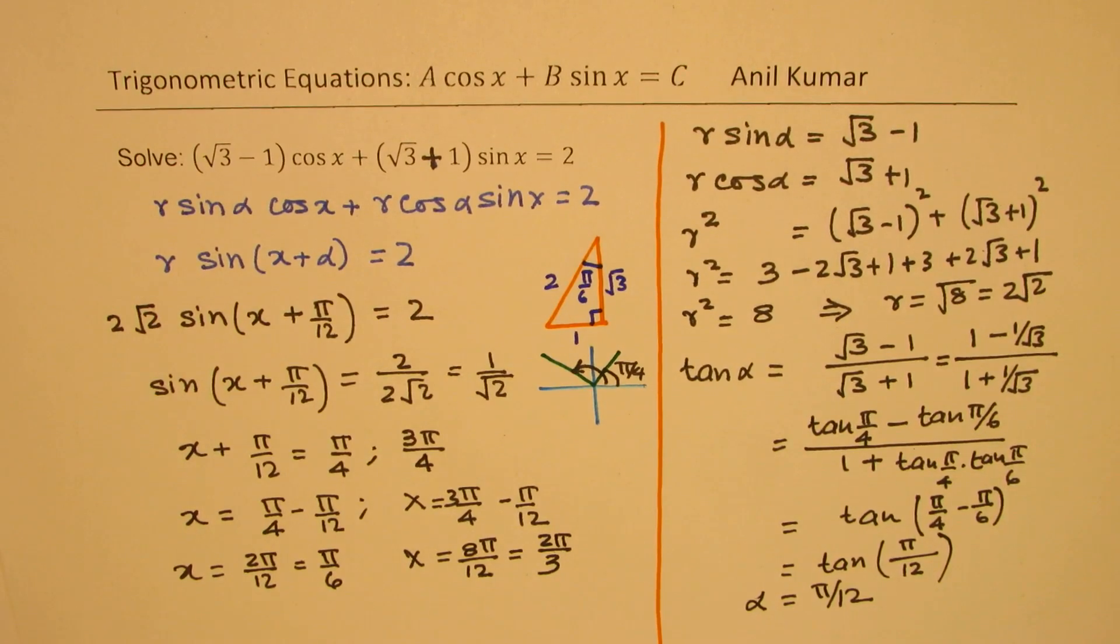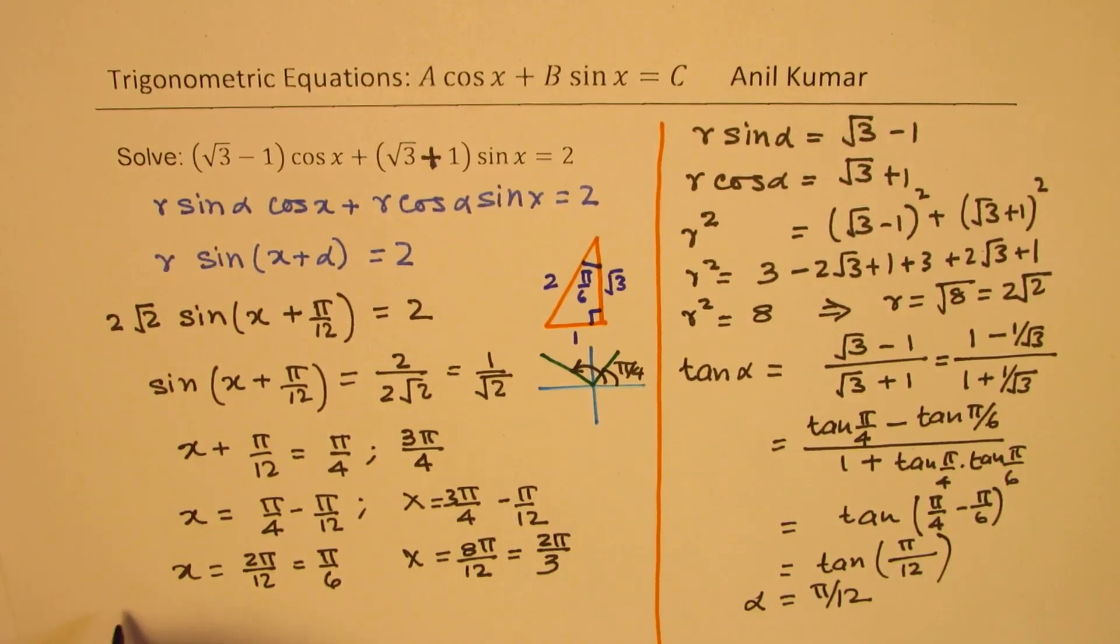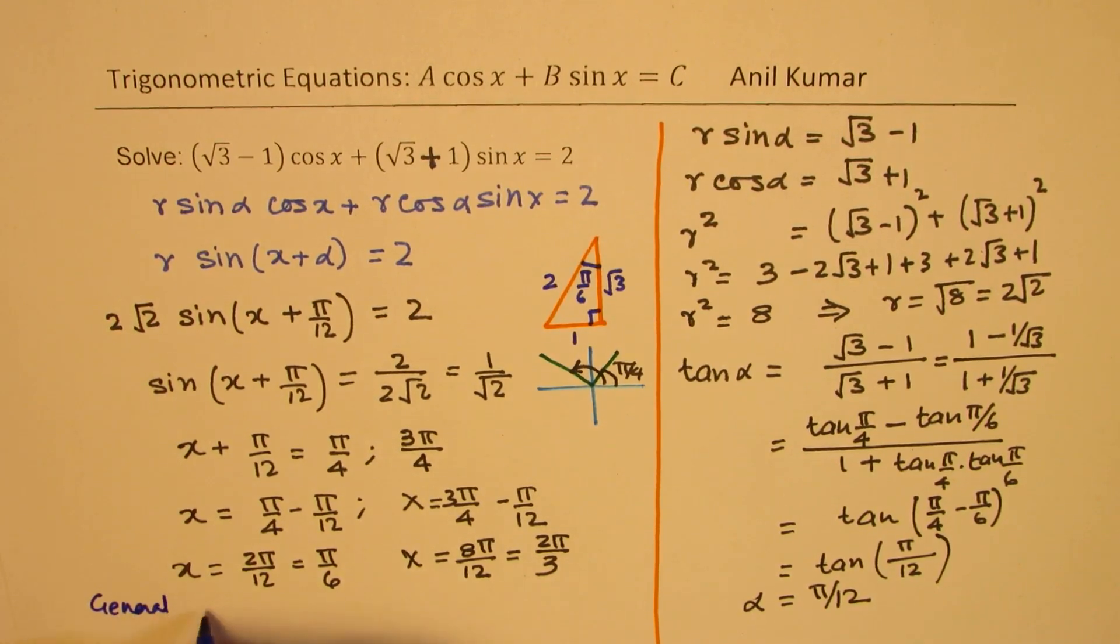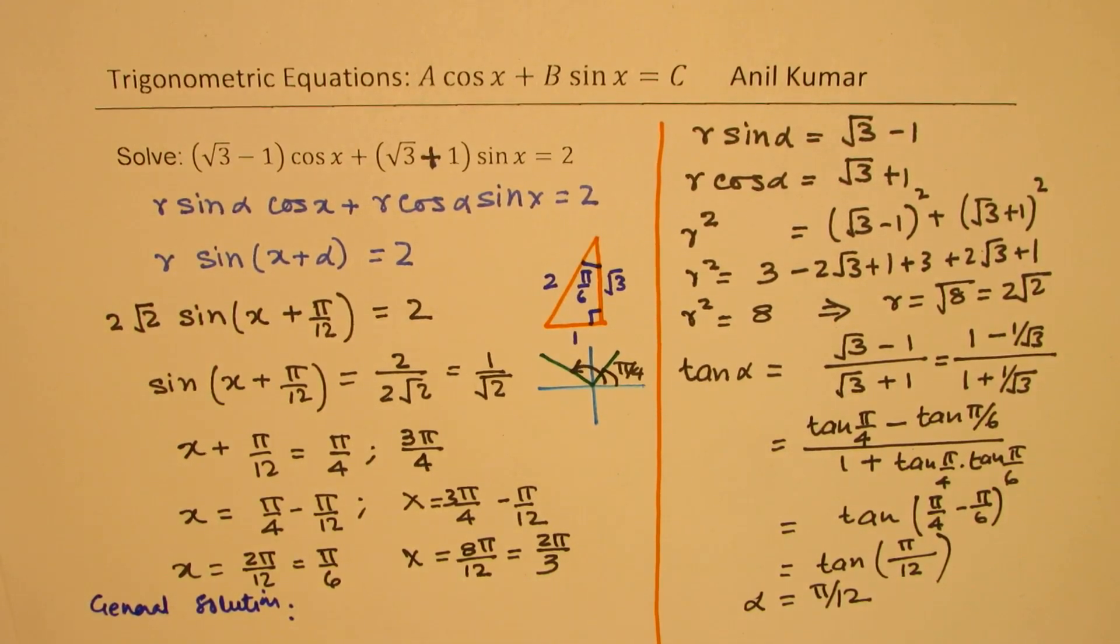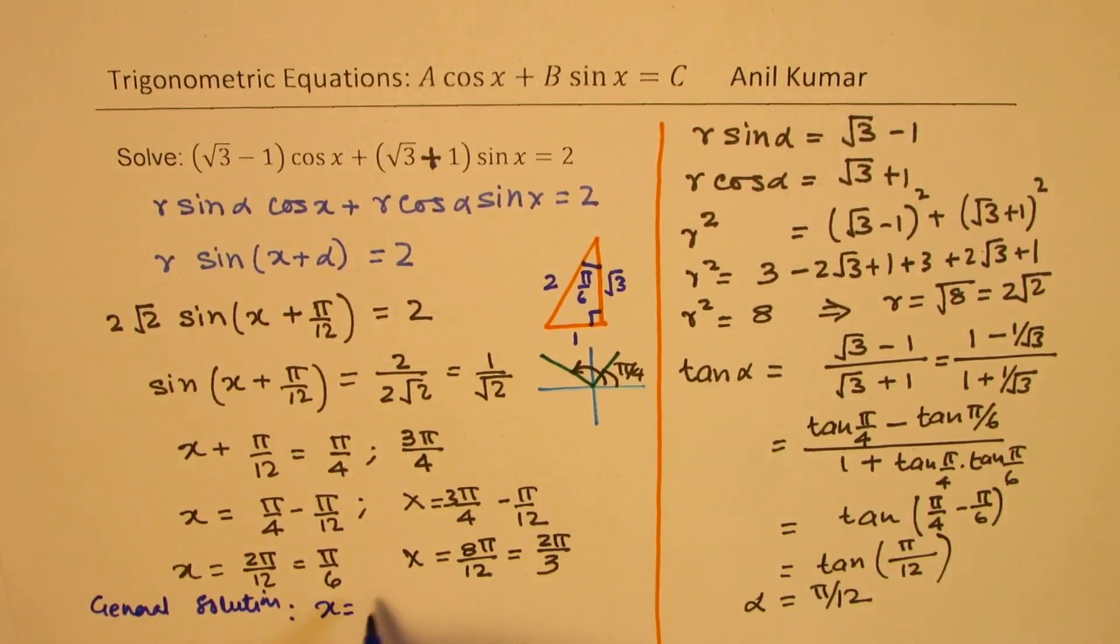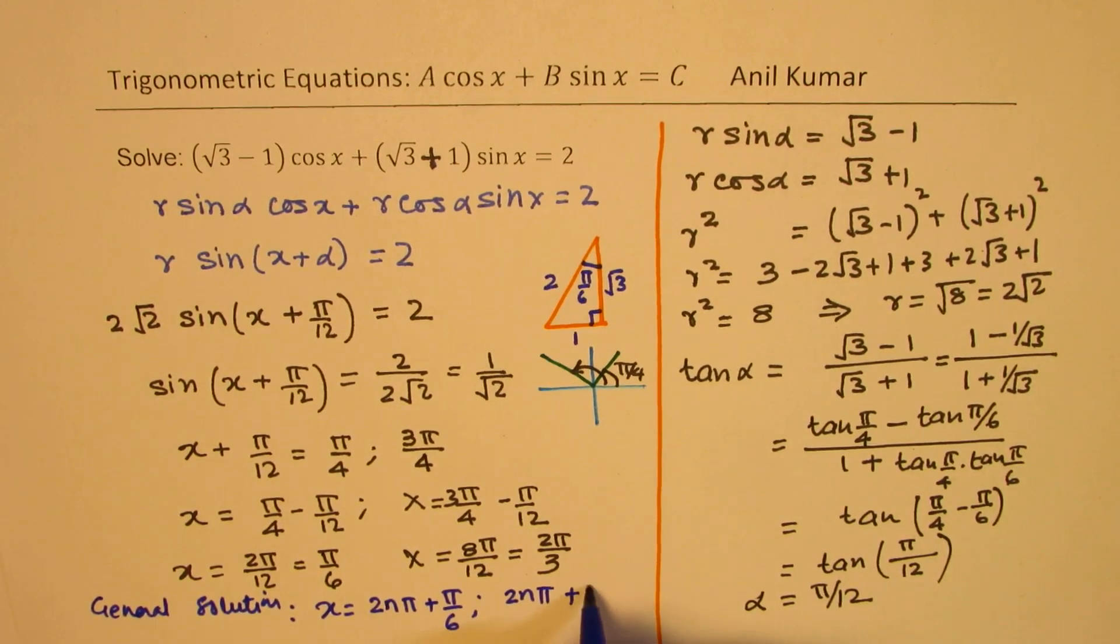So those are the two solutions. So we can now write a general solution here. General solution will be x equals 2n pi plus pi by 6. The other one is 2n pi plus 2 pi by 3.